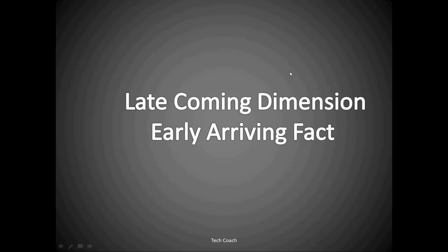Hi guys, my name is Vivek and in this video tutorial we are going to talk about late coming dimension or early arriving fact. Late coming dimension or early arriving fact is nothing but when a row arrives in a fact table and its corresponding dimension does not exist.